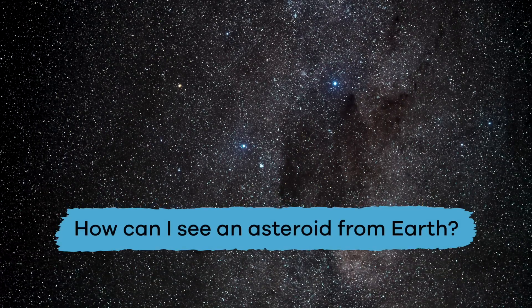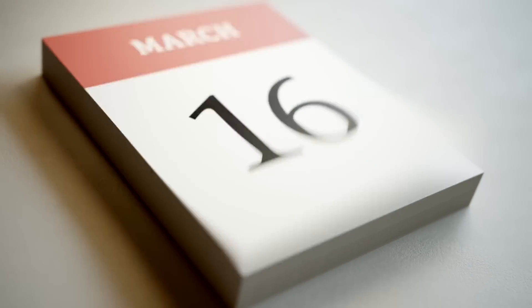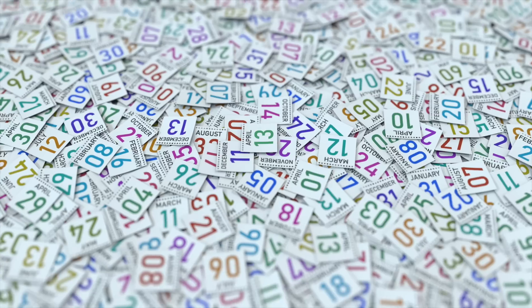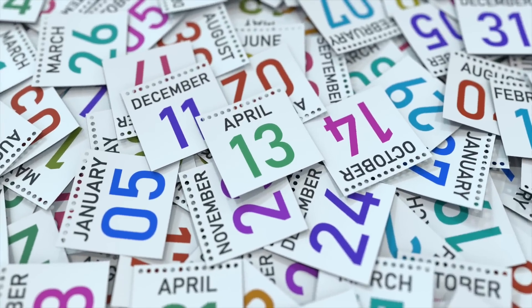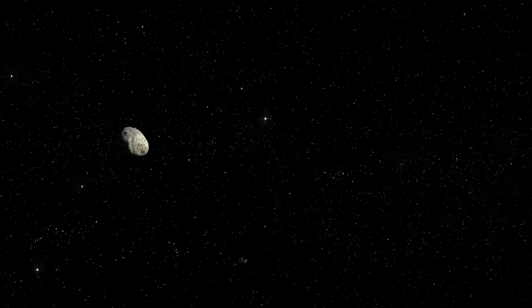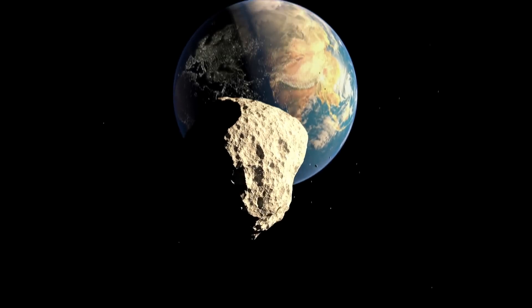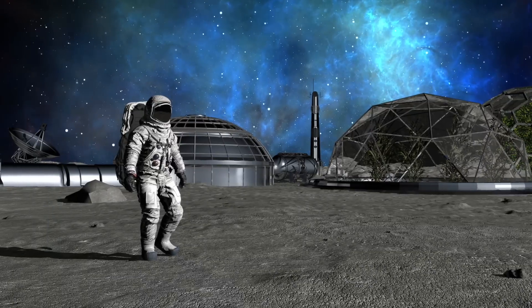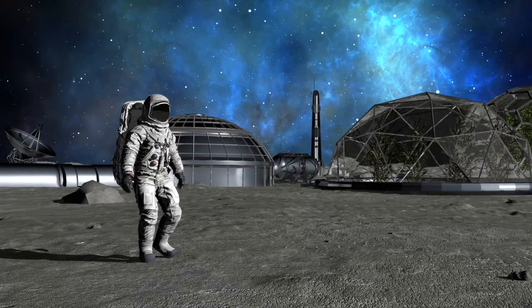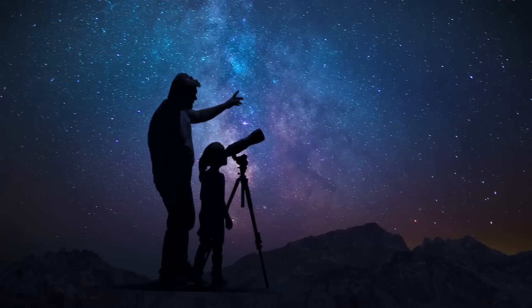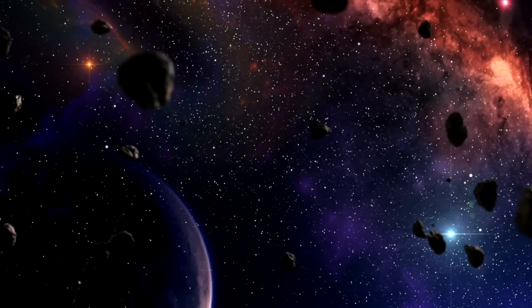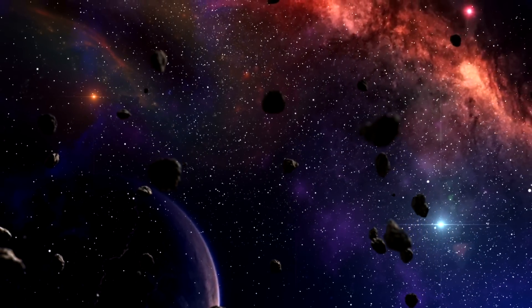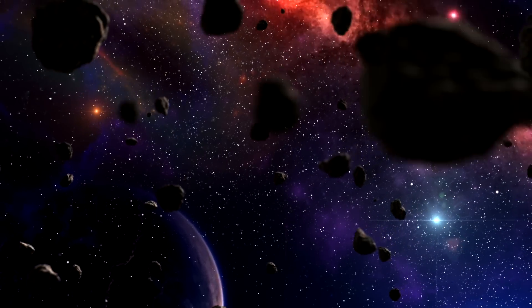How can I see an asteroid from Earth? Get ready to mark your calendars, because scientists predict that on April 13, 2029, an asteroid flying past Earth will be visible to the naked eye. So whether you want to be the first kid that lives on an asteroid, or you'd rather just stay on Earth and watch as one passes by, asteroids are a pretty incredible part of our solar system.